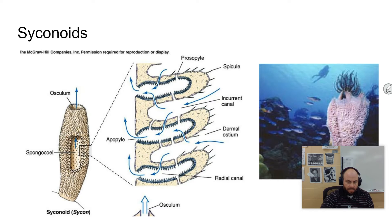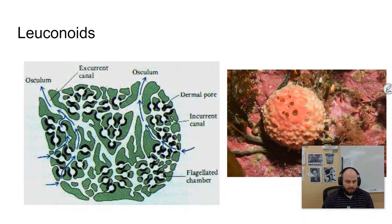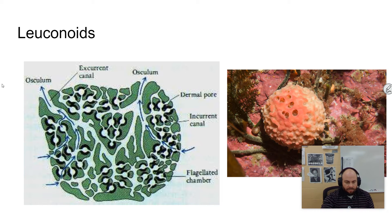In the syconid, the area lined with choanocytes provides a much greater surface area to volume ratio. The spongiocele has a smaller diameter, which directs water flow and allows those choanocytes to come into contact with more water. The last type is the leuconid, which is the most complex. This allows sponges to increase in size because there is the greatest surface area for feeding, with lots and lots of tiny chambers.